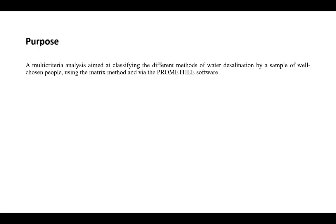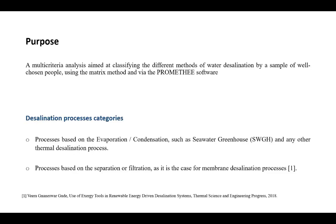The purpose of this paper is to carry out a multi-criteria analysis aimed at classifying the different methods of water desalination by a sample of well-chosen people using the matrix method and via the PROMETE software. The various desalination processes can be classified into two main families: processes based on evaporation and condensation, such as the seawater greenhouse, and processes based on separation or filtration, such as the membrane desalination processes.